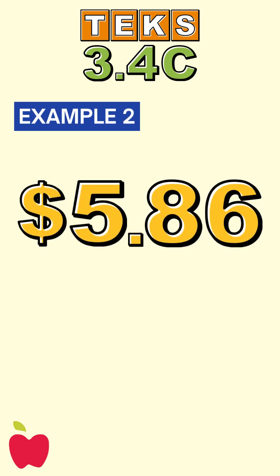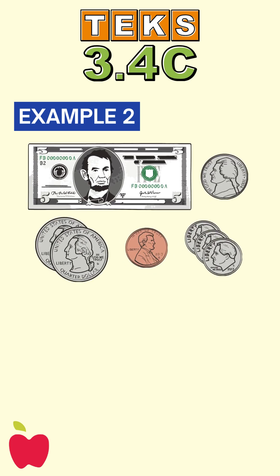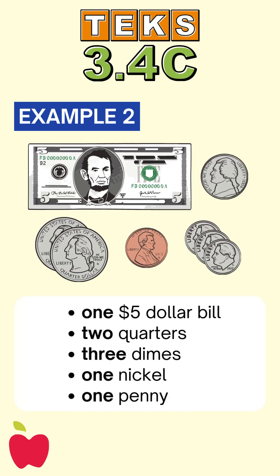Let's say you're at a store and you want to buy a toy that costs $5.86. You have the following: one $5 bill, two quarters, three dimes, one nickel, and one penny. Let's see how much money you have.